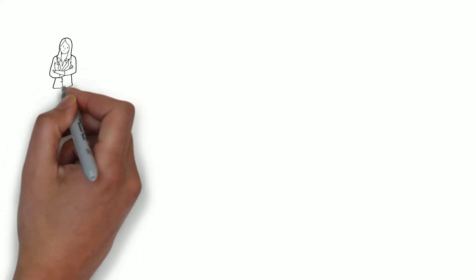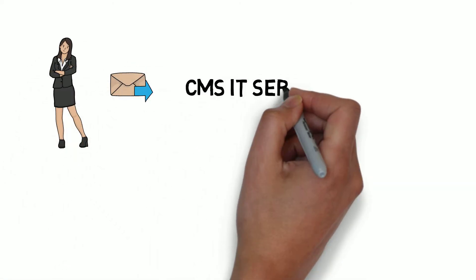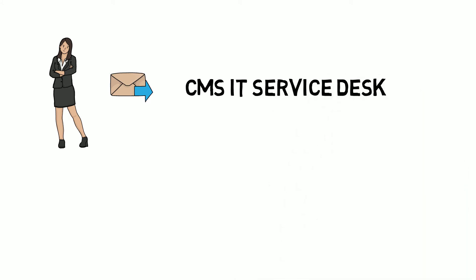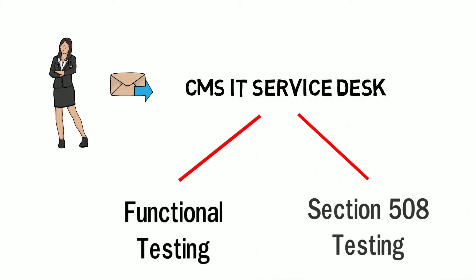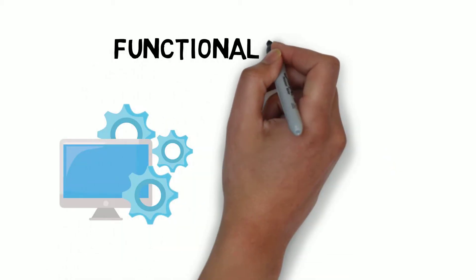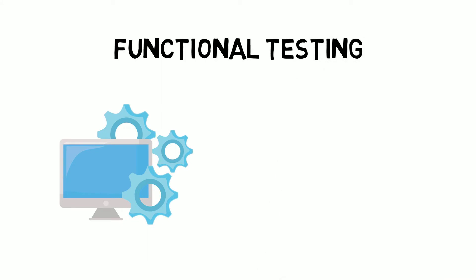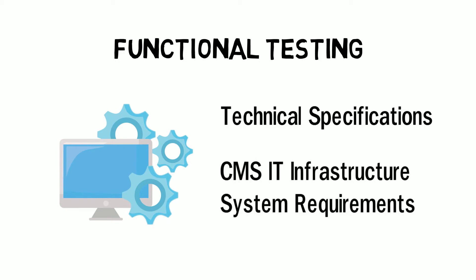If you are a business owner and you have a new software application, you will first send a request through the CMS IT Service Desk. From there, it moves to both functional testing and Section 508 testing. For functional testing, the software or application is tested for its functionality to see if it meets the desired technical specifications and system requirements at CMS.